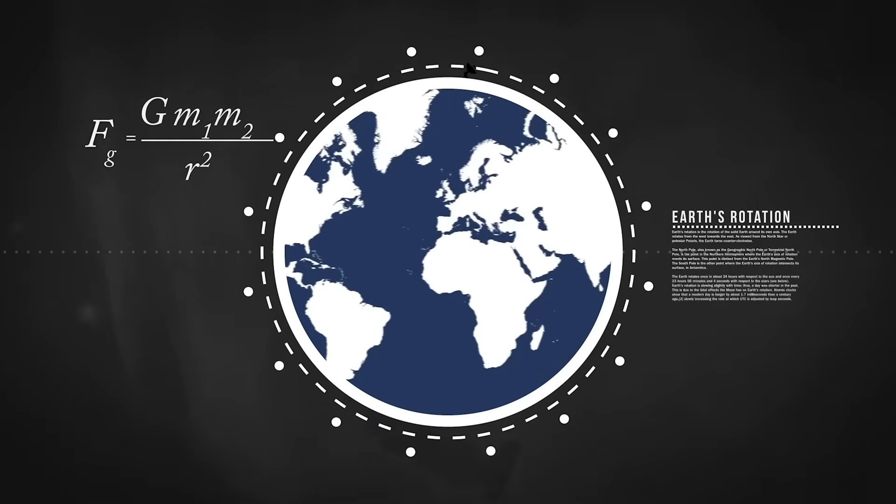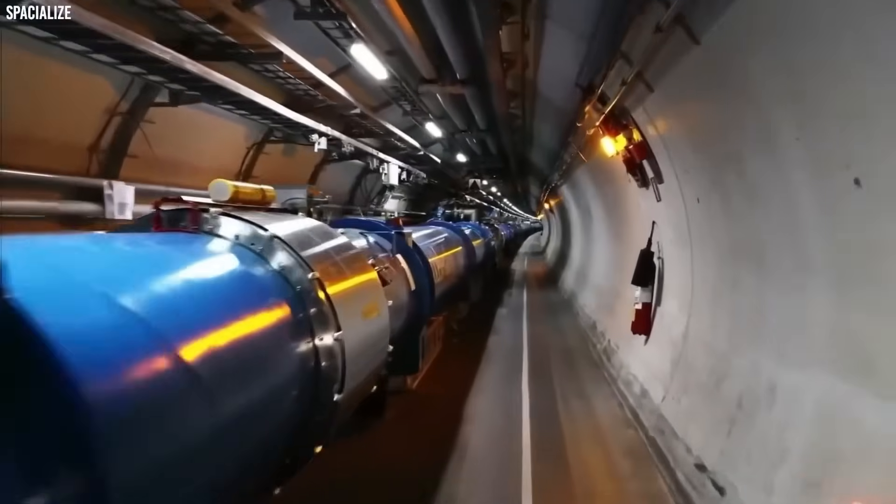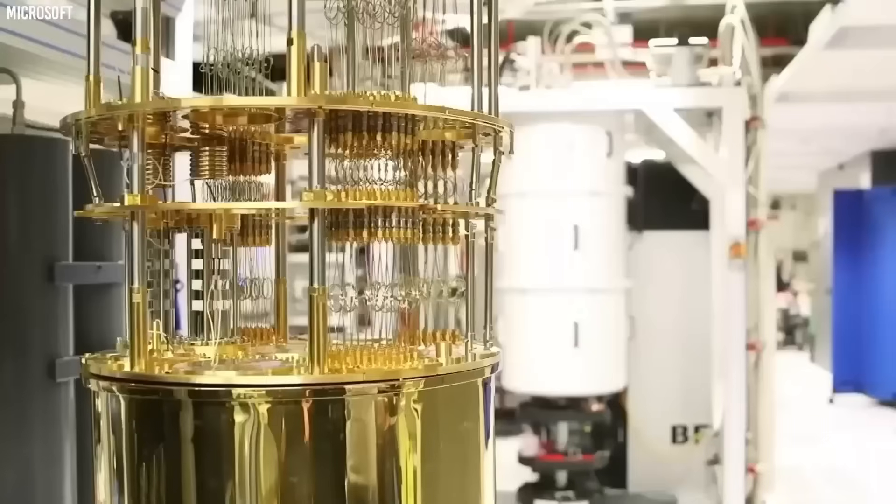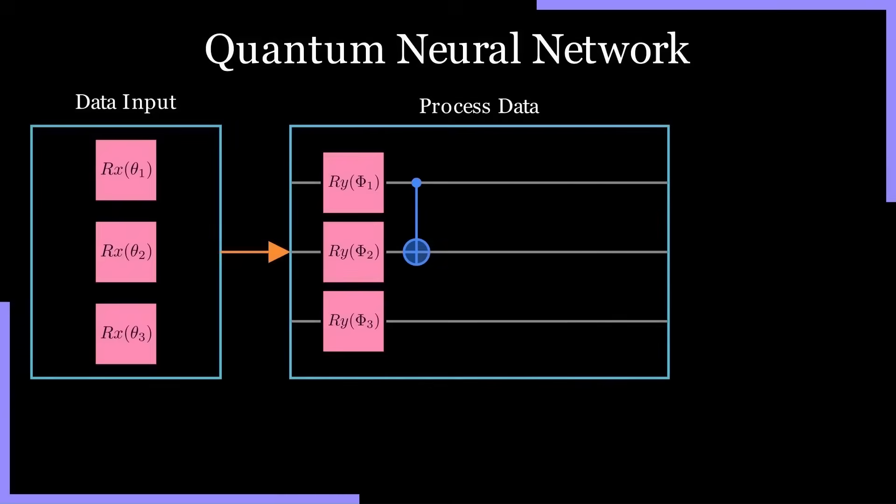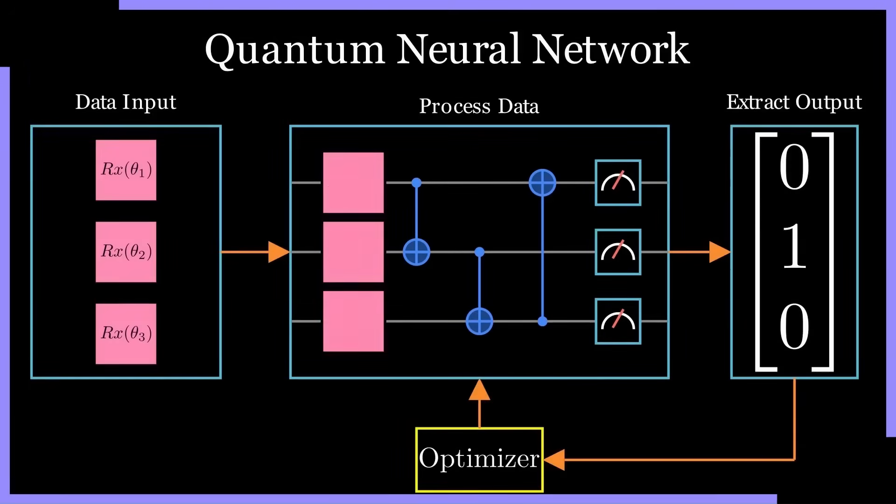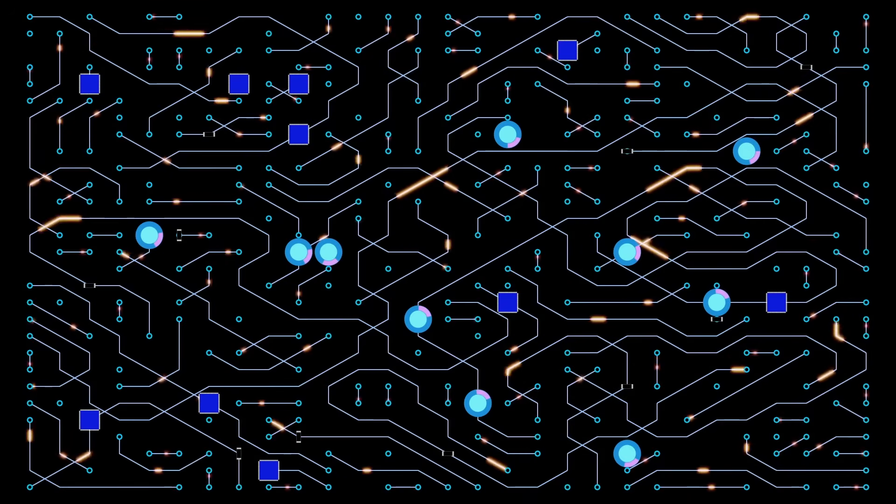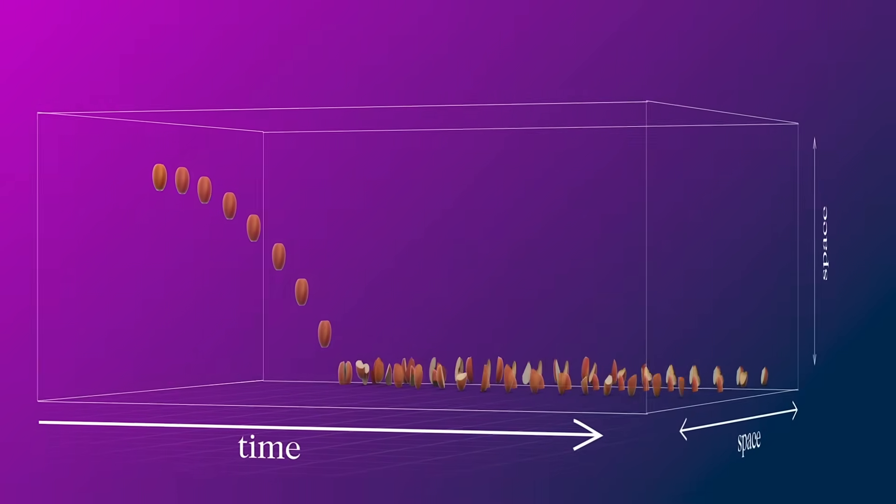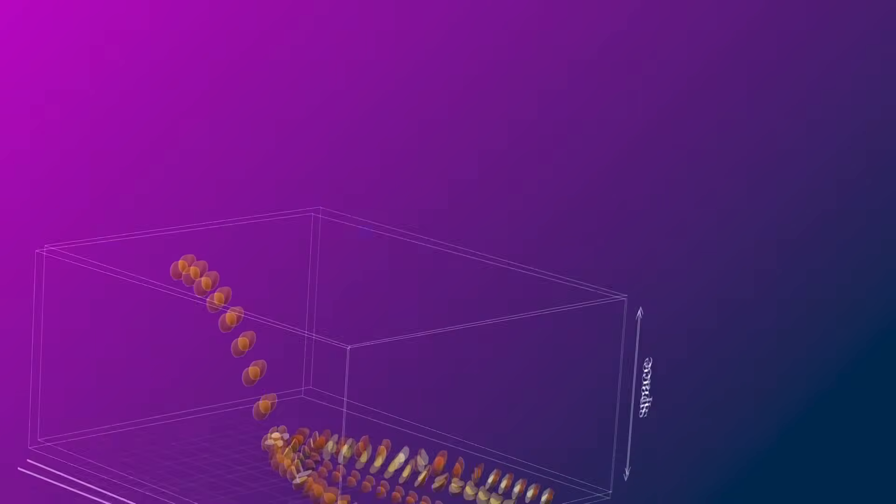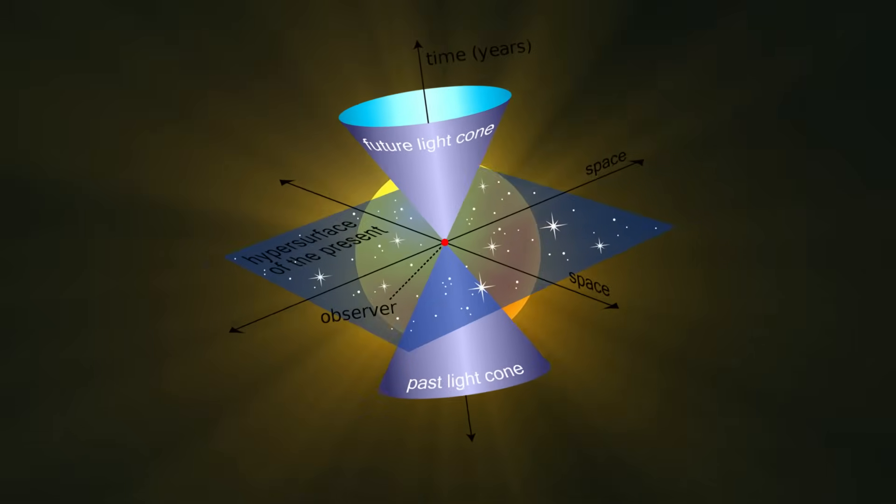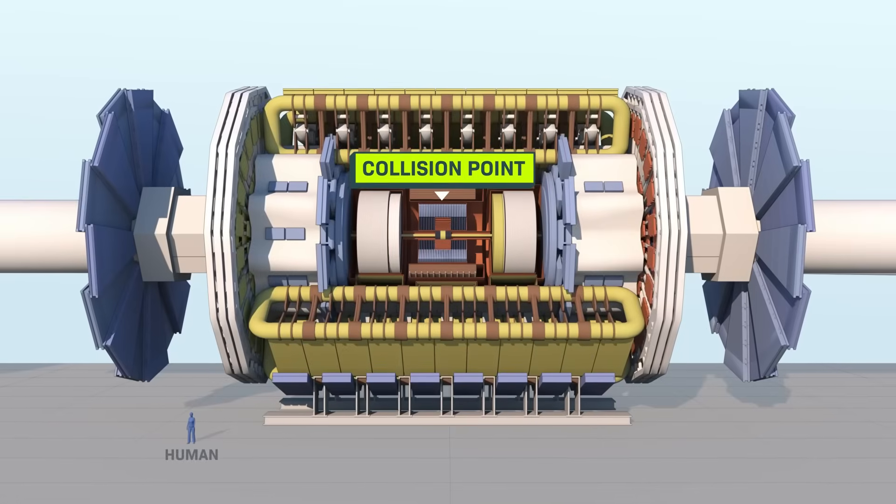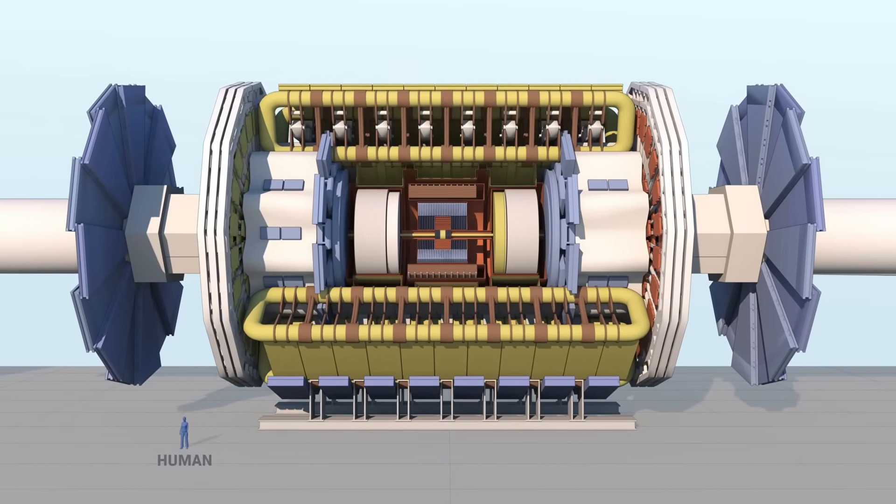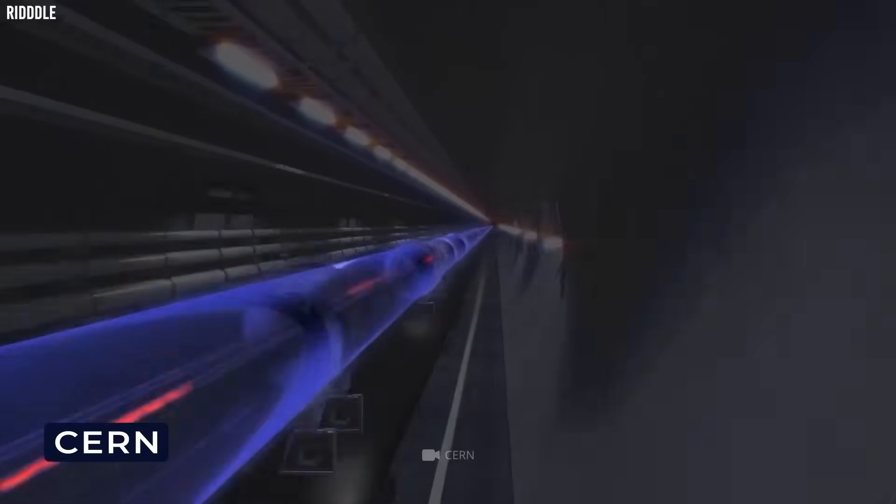One of the immediate concerns is that if time can collapse, it might affect the stability of quantum systems. Quantum computers, for instance, rely on the predictable flow of time to perform calculations and manage qubits. A scenario in which time behaves unpredictably could lead to computational errors, system crashes, or even more serious failures in systems that depend on precise quantum behavior. Imagine encryption methods suddenly becoming unreliable because the underlying physics they depend on is shifting in ways we can't control.